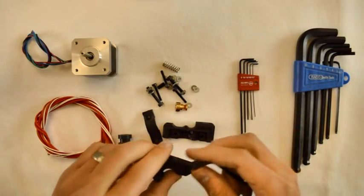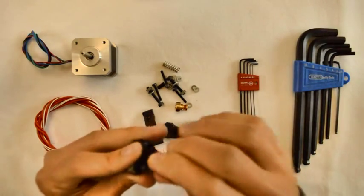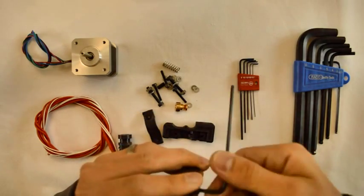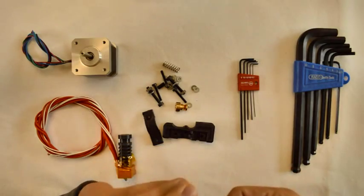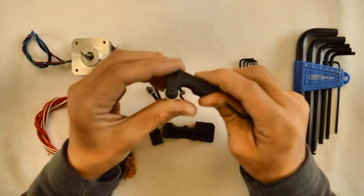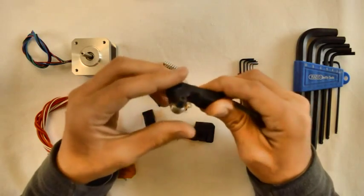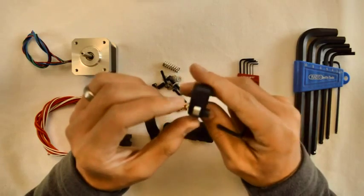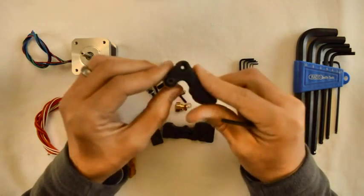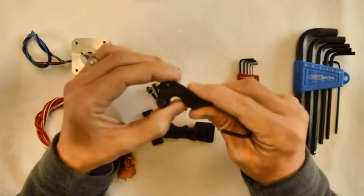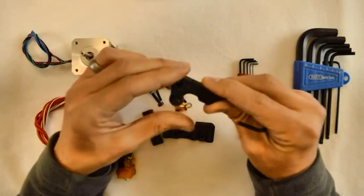We take the number 3 Allen key and you tighten it so that the bearing can still turn. It's not required to torque the screw otherwise it will strip the thread. The only use is to keep the screw in place and the bearing must still be able to turn.